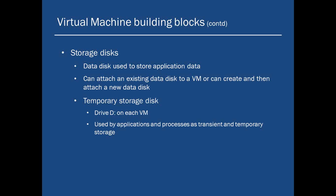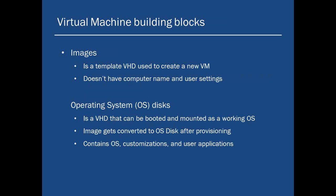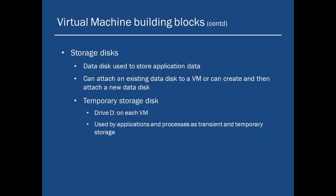If you want something to be stored permanently — for example, user-specific information or application-specific information — you can create a new disk and attach it, the way you open up a CPU, add a hard disk, configure it, and create a partition. In the same way here you create a new disk virtually, attach it to a VM, and assign a drive letter and partition. In my demo I am going to demonstrate this — we are going to create a virtual machine, I will show you the operating system disk, the temporary storage disk on drive D, and we will also see that you have a data disk which you can create and attach to an existing VM.